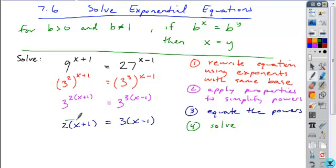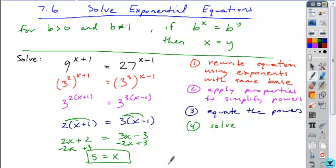Okay, so here we can distribute our 2, distribute our 3, and solve that equation. So it's just a linear equation, we subtract the x's, move them to one side, move all the constants over to the other side. We get 5 is equal to x, and that would be our solution.